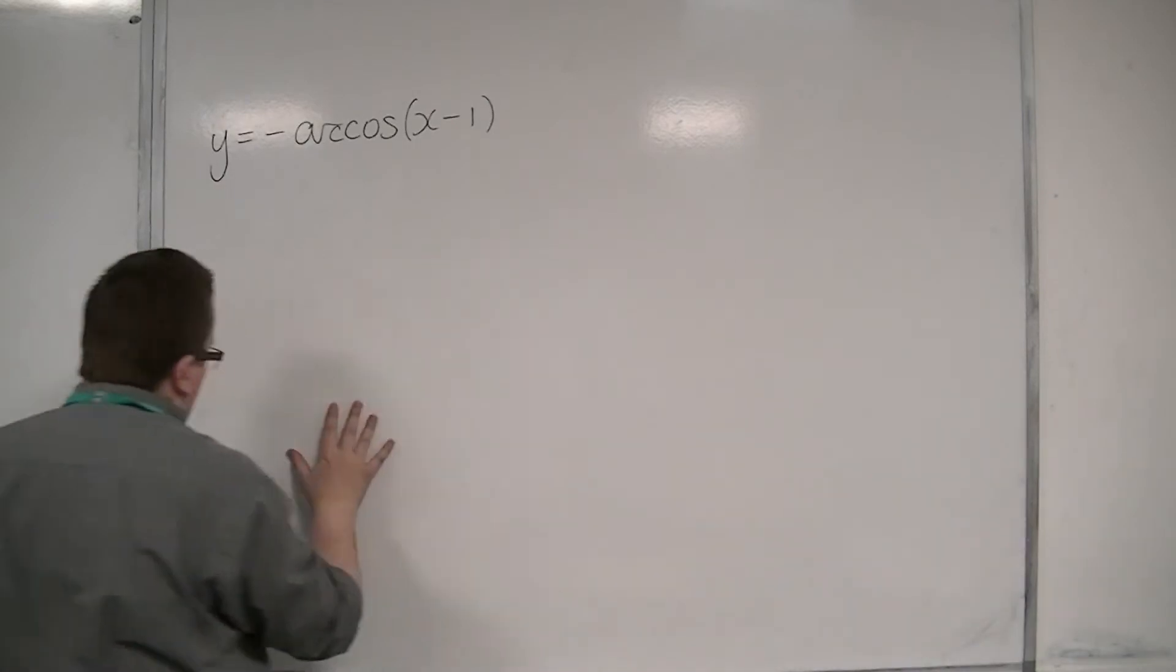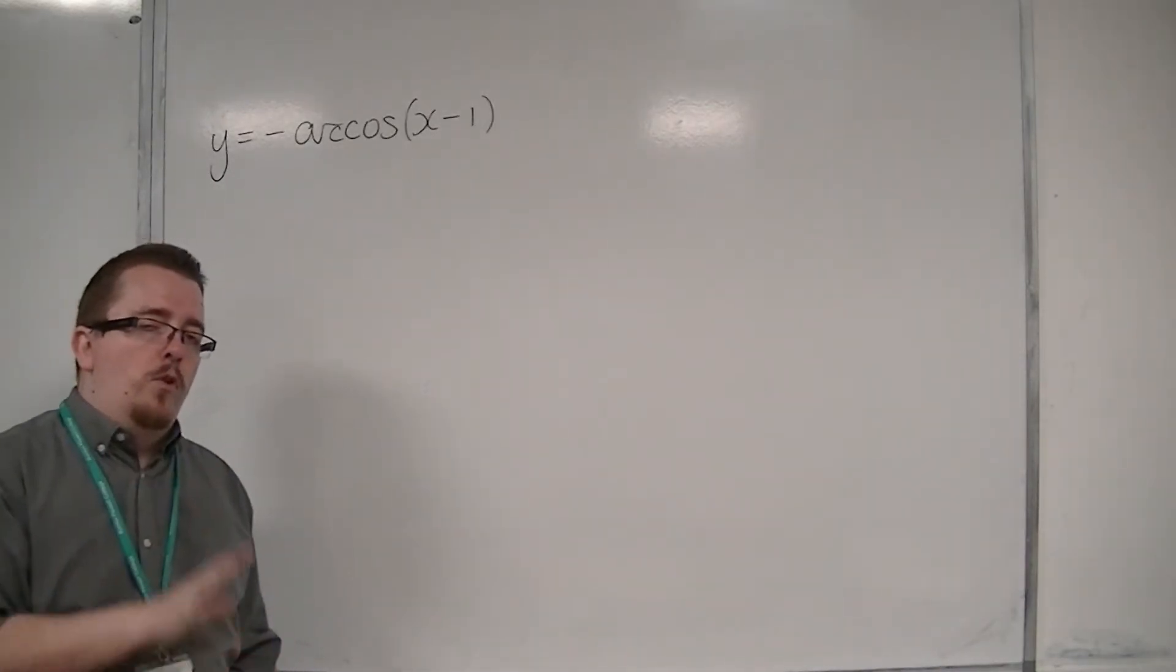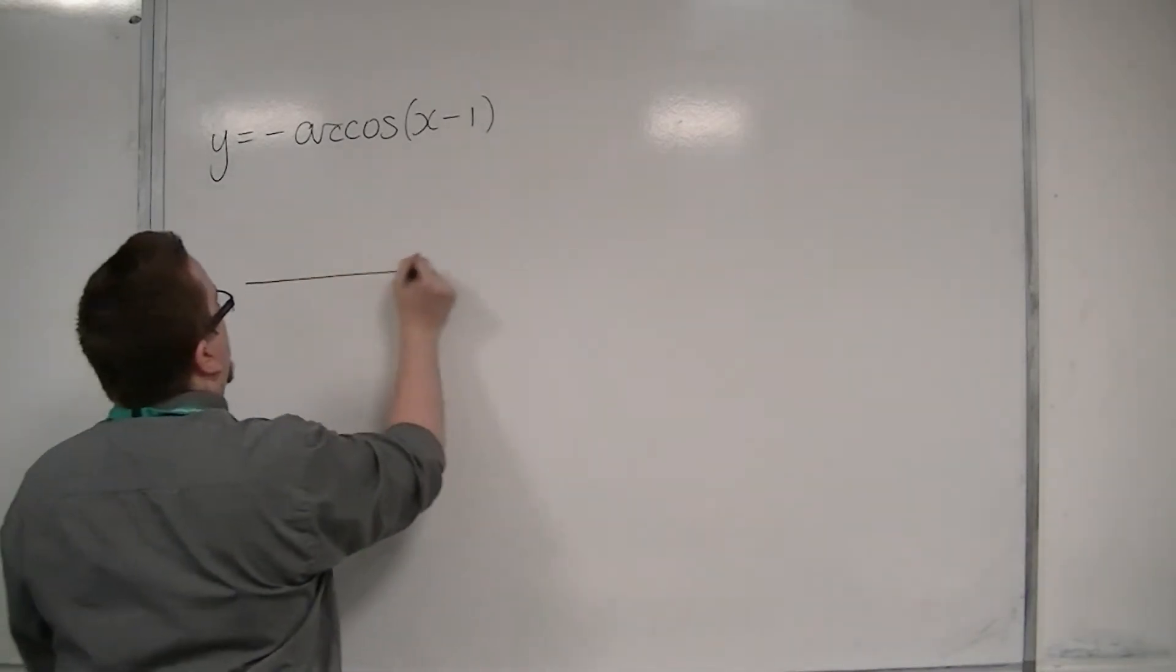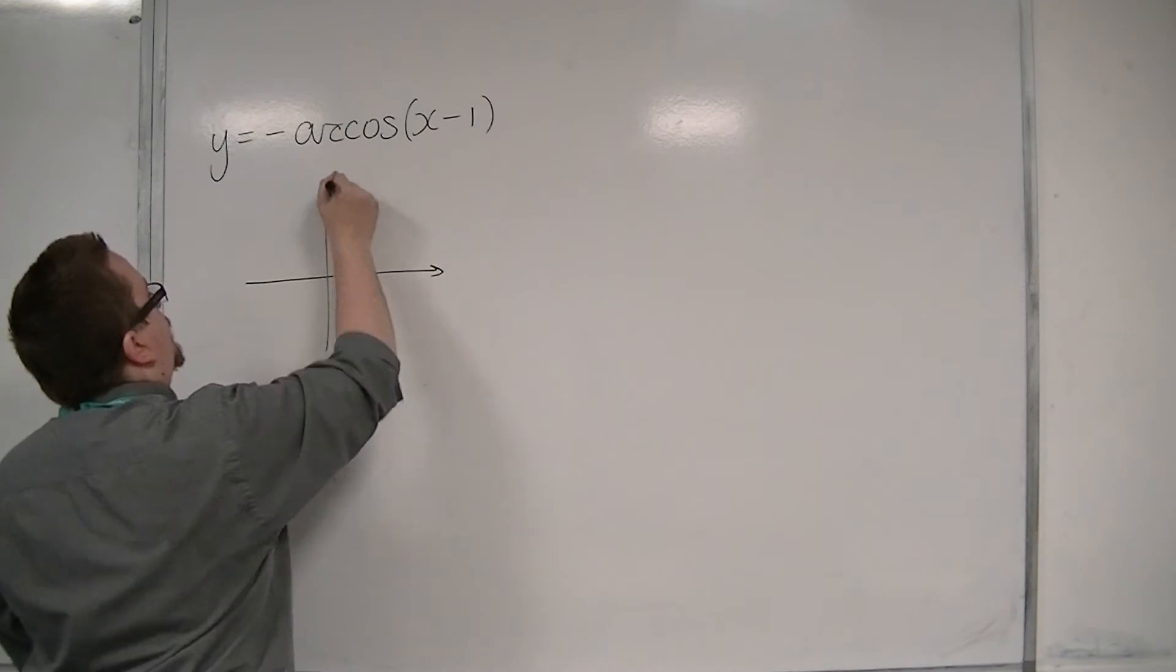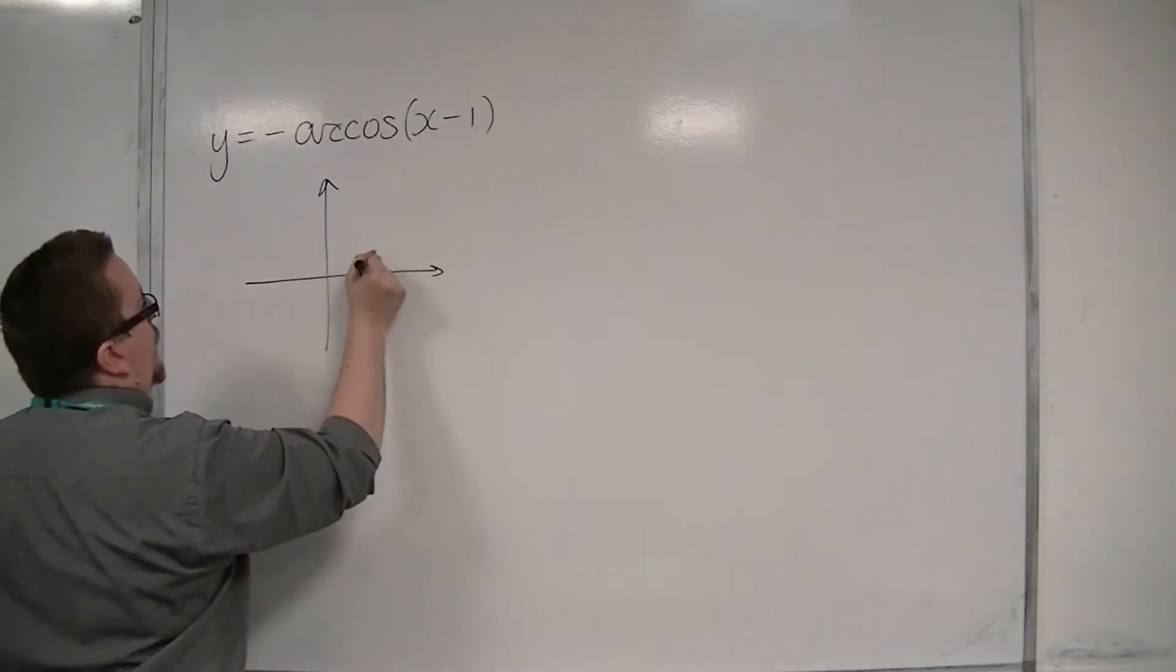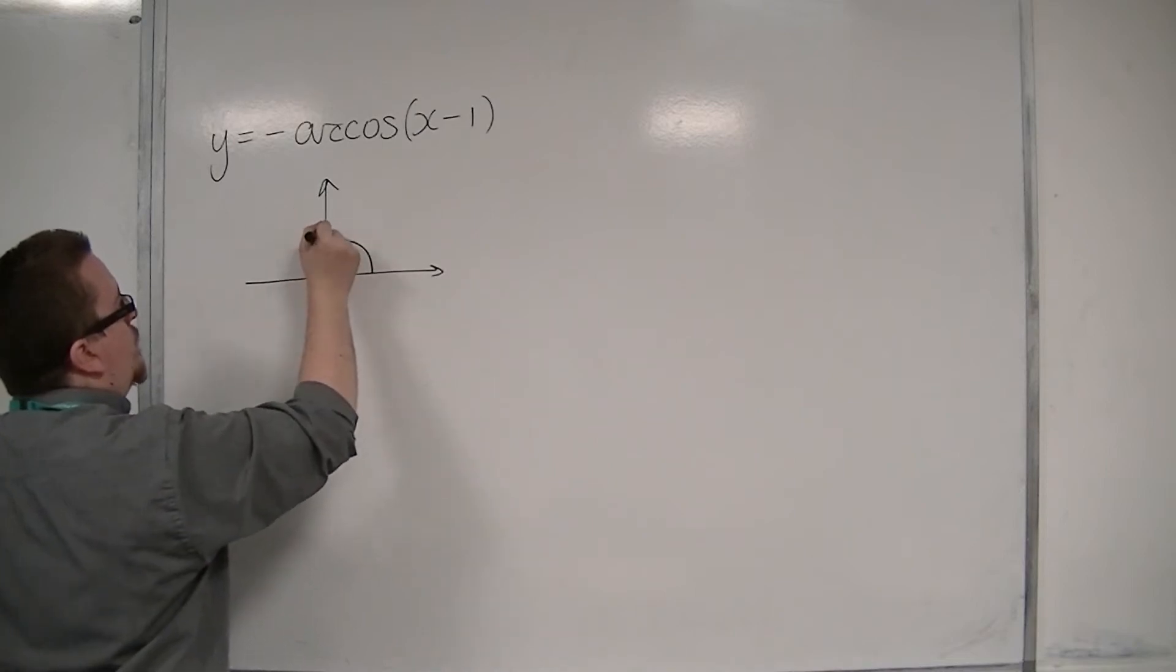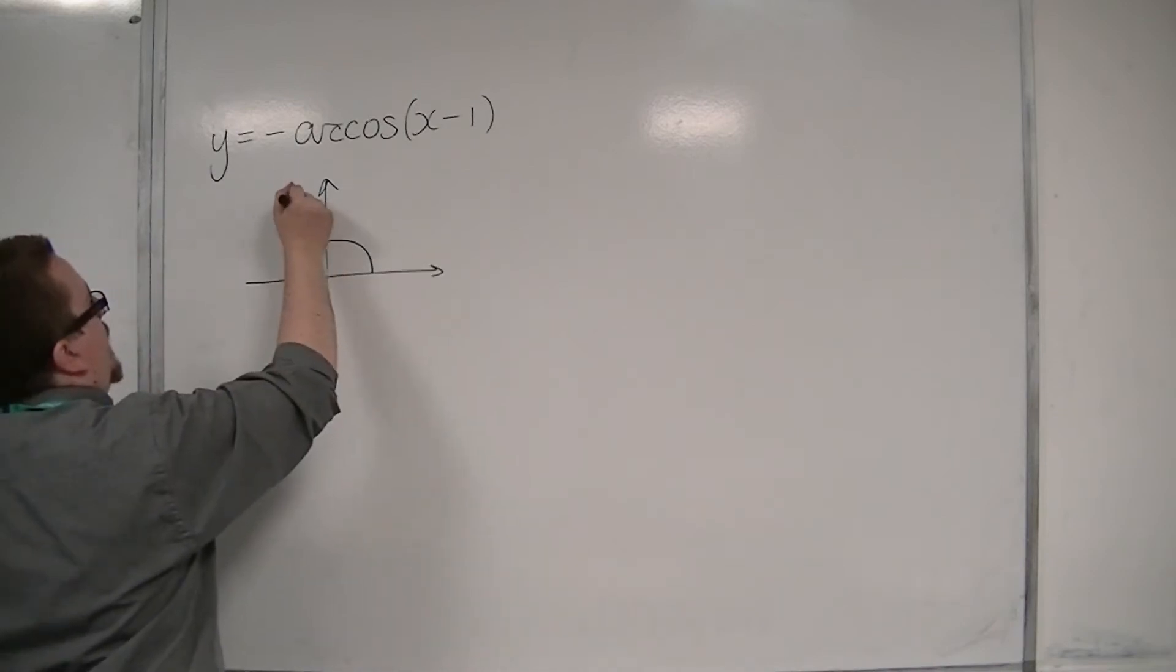The first thing to do is really to draw what arc cos of x looks like. Let's remind ourselves of that. So, arc cos looks something like this. That wasn't very good. Let's try again. A little bit better.